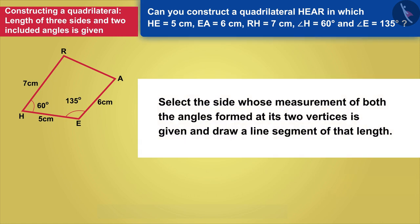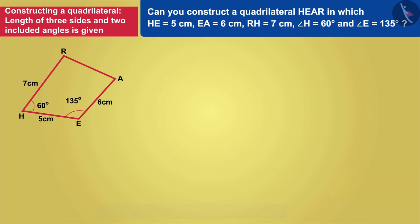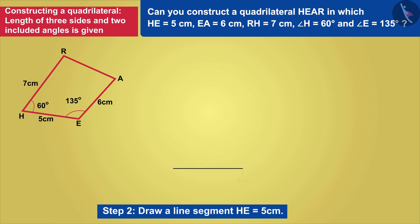Select the side whose measurement of both the angles formed at its two vertices is given, and draw a line segment of that length. Since we know the value of angle H and angle E here, we will draw a line segment of length 5 cm, selecting the side HE and construct it and name it HE.